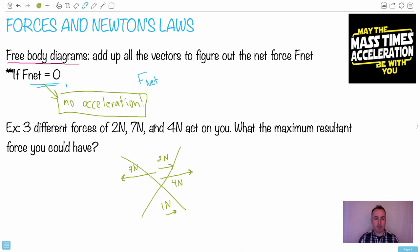In this example here, we have two newtons, seven newtons, and four newtons. What's the maximum resultant force you could have? In this case, the maximum you could have is if you had them each on top of each other. It doesn't matter which order you do them. As long as you add up all three of the vectors in the same direction, that's the maximum you can have. Seven plus two is nine. Nine plus four is 13. So that would be the maximum force you could have.